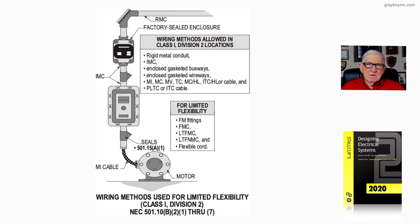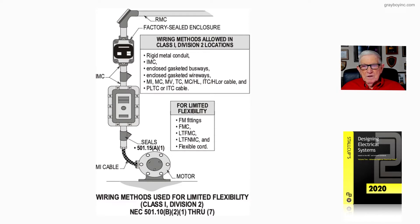Now let's look at Figure 21-23. This figure deals with wiring methods used for limited flexibility in a Class 1 Division 2 location in accordance with 501.10B1-7. Notice it deals with wiring methods and flexibility.